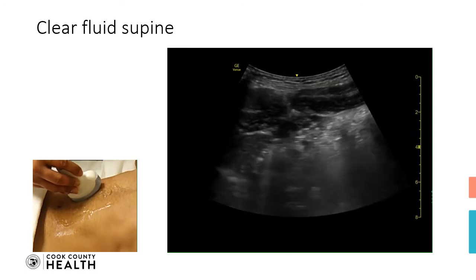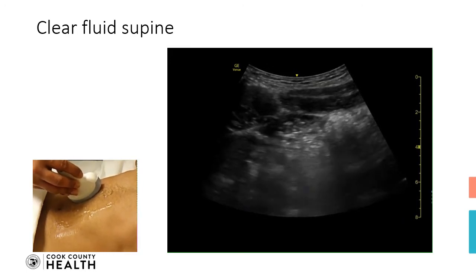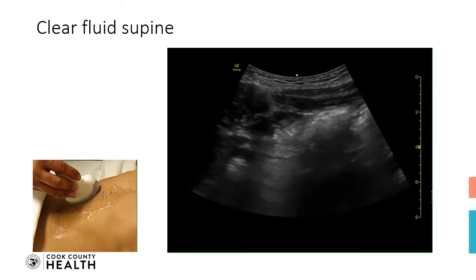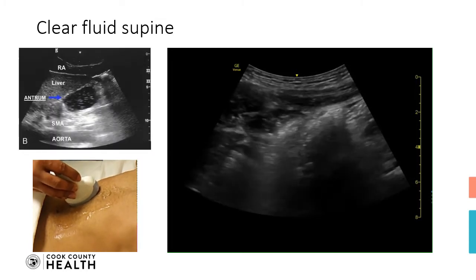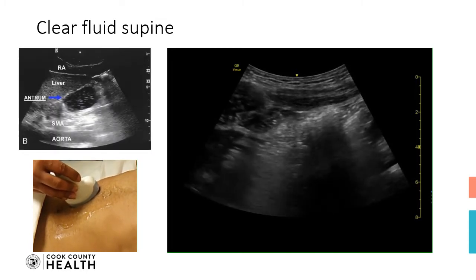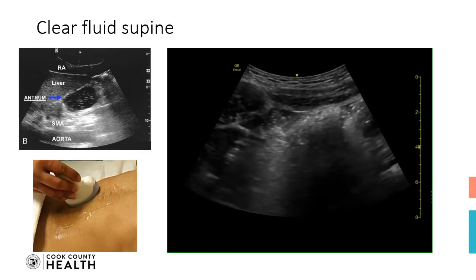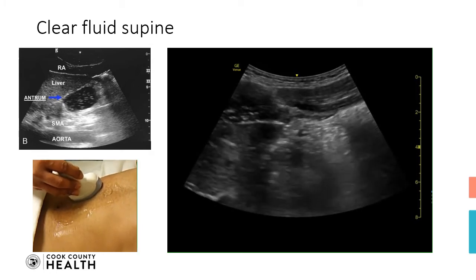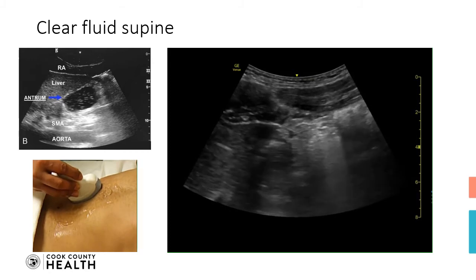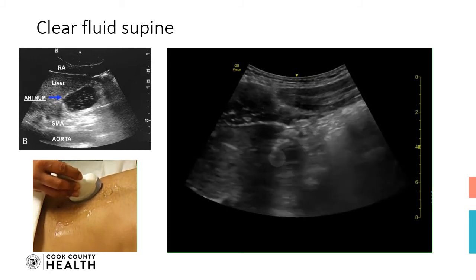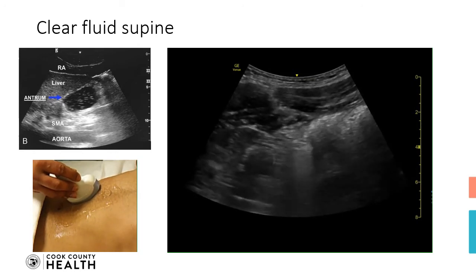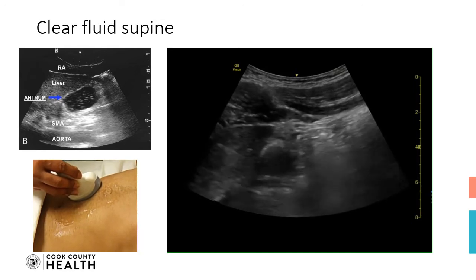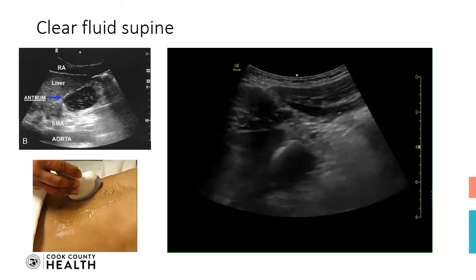This subject has had two glasses of water now. What we can see is a clear liquid in the antrum. The appearance is described as a starry night liquid appearance, where you will see a hypoechoic antrum filled with a few dots of air bubbles. You can appreciate this picture — it is a hypoechoic structure with lots of dots in it, which is the starry night appearance.